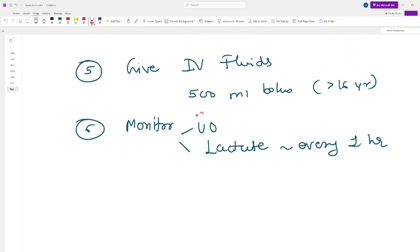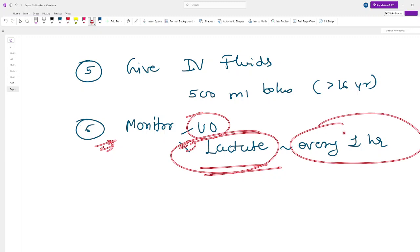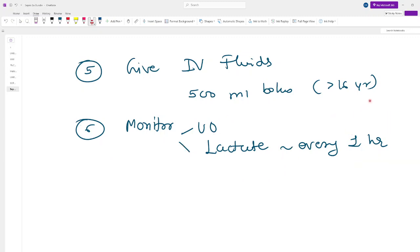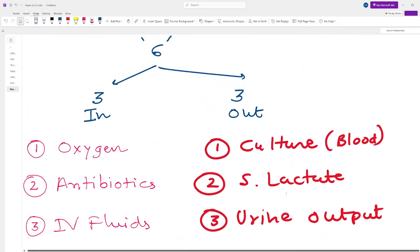The sixth thing is monitor urine output and lactate. Repeat the lactate every hour if the lactate is more than 4, or if the condition of the patient changes. Continuous urine output monitoring should always be done.